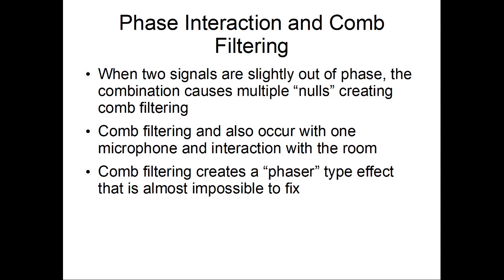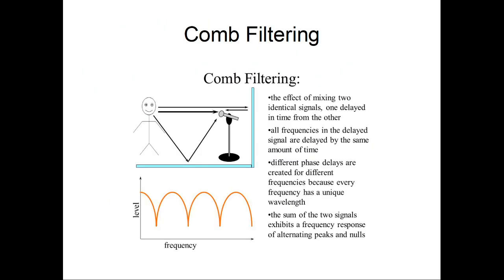That's why getting phase right from the start is extremely important. Comb filtering can also happen with a single microphone — if the microphone is picking up the direct signal but also picking up a slightly delayed signal bouncing off the floor and back wall. Of course, if it's a cardioid mic, it doesn't matter as much if it's bouncing off the wall. But really it's the combination of the direct signal and the reflected signal that causes problems with a single mic. You can mitigate this by putting the mic closer.